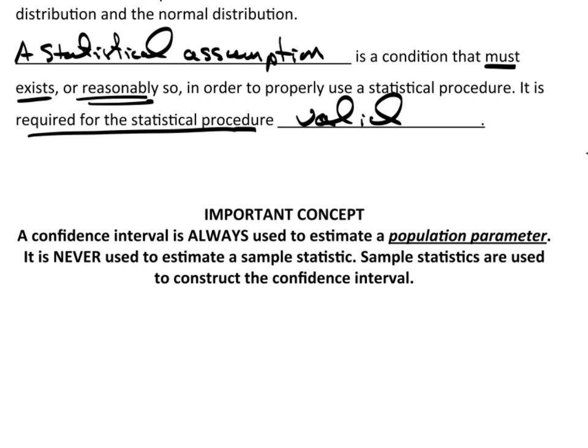Now this is an extremely important concept right here. A confidence interval is always, always, always used to estimate a population parameter. You're trying to figure out the parameter value. It's never used to estimate a sample statistic. Sample statistics are used to construct the confidence interval so that we can estimate the population parameter.